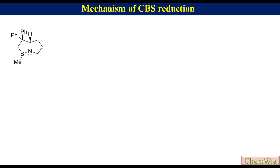This is the oxazaborolidine used as a catalyst in CBS reduction, also called CBS catalyst. It is used in catalytic amount, generally 10 mole percent of the reactant. The catalyst chosen for our discussion has S configuration. The boron atom acts as a Lewis acid while the nitrogen atom acts as a Lewis base.